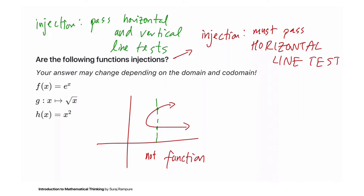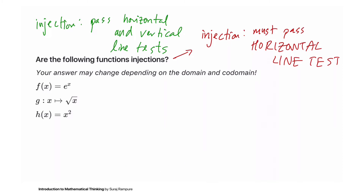Why does it need to pass the horizontal line test? Well, horizontal lines tell us whether two input elements have the same output, because the y-axis tells us what the outputs actually are. That way we can quickly check if two elements have the same output and know that it's not an injection.